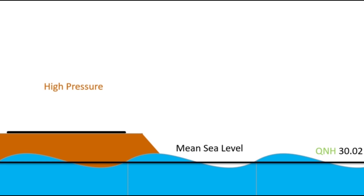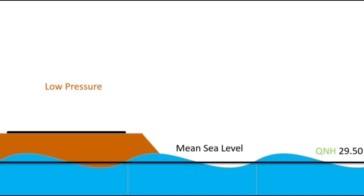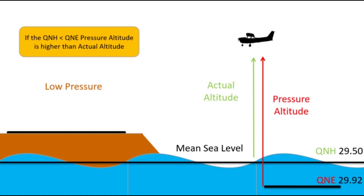If the outside atmospheric pressure is higher than the standard setting — that is, QNH is higher than QNE — the isobar of 29.92 inches of mercury will be higher than sea level, and your pressure altitude will be less than actual altitude. In case the outside atmospheric pressure is less than the standard setting — that is, QNH is lower than QNE — the isobar of 29.92 inches of mercury will be lower than sea level, and your pressure altitude will be higher than the actual altitude.